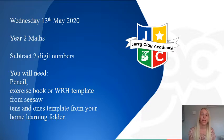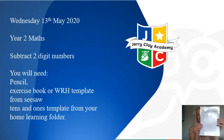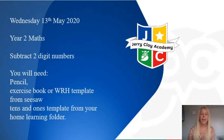Today in maths we are going to be subtracting two-digit numbers, so today you will need a pencil and your home learning book. If you can download the White Rose Hub template from either the White Rose Hub or Seesaw, that would be brilliant. But if not, you will be able to do everything that you need in your home learning book. You will also need your 10s and 1s template from your home learning folder and there will be an opportunity to use some practical resources.